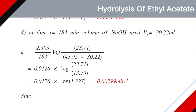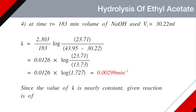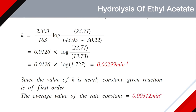Since the value of the rate constant k is nearly constant at each time interval, the given reaction is of first order. The average value of the rate constant is 0.00312 min⁻¹.